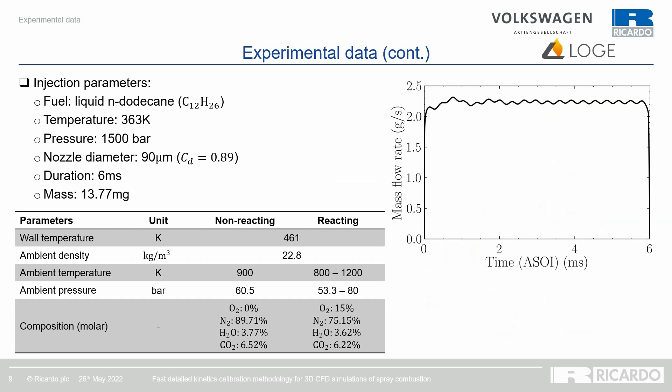The injection parameters for the set of experiments are as follows. The liquid n-dodecane is injected at 363 Kelvin with a 1500 bar rail pressure. The nozzle diameter is 90 microns with a blockage ratio of 0.89, and about 14 mg of fuel is injected over a duration of 6 ms, with a mass flow rate experimentally measured and filtered. For all cases considered, the wall temperature and ambient density are constant and kept identical.